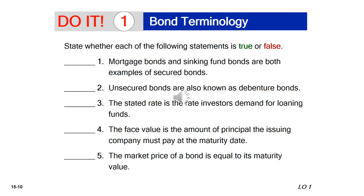Let's go over a true-or-false exercise. Number one: mortgage bonds and sinking fund bonds are both examples of secured bonds — true. Number two: unsecured bonds are also known as debenture bonds — true. Number three: the stated rate is the rate investors demand for loaning funds — false. Number four: the face value is the amount of principal the issuing company must pay at maturity — correct. Number five: the market price of a bond equals its maturity value — false, as we established.